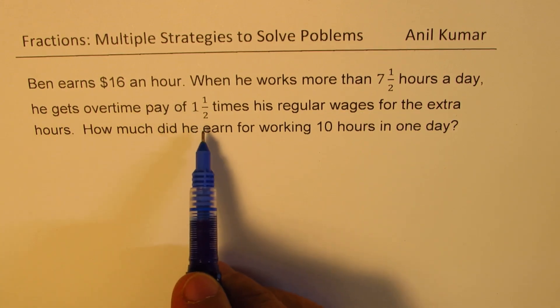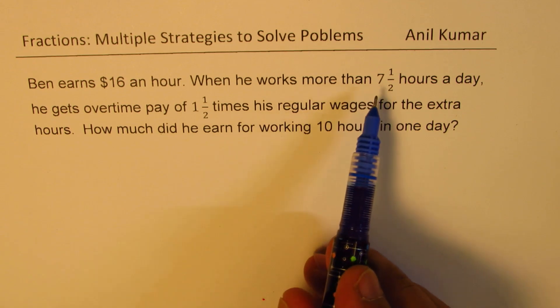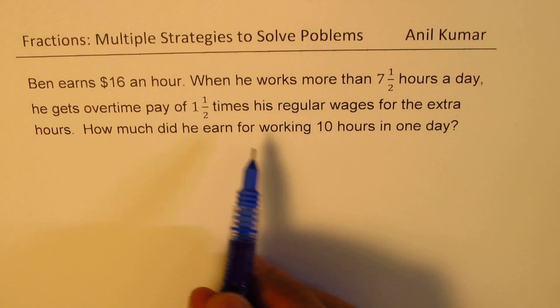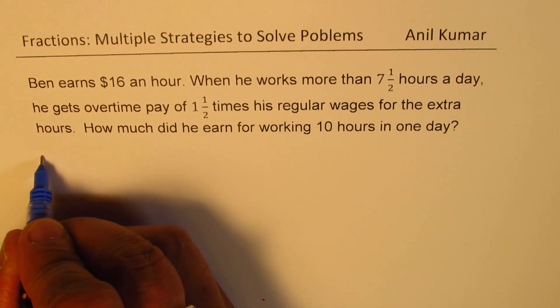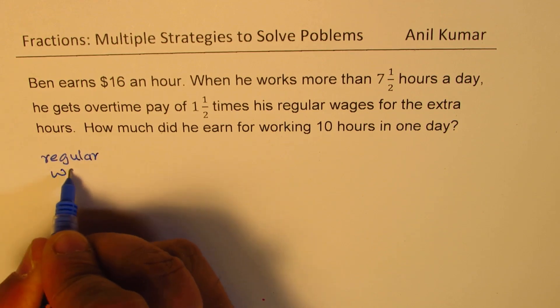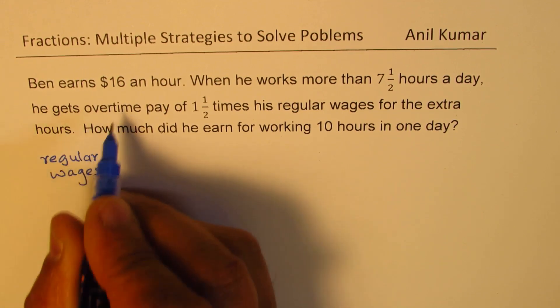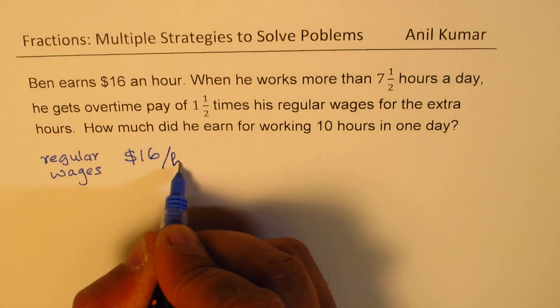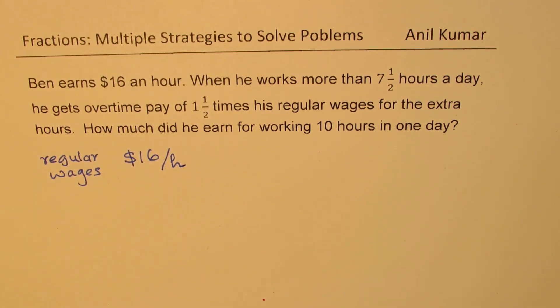Now here we are talking about two things. One is the time, the second is the dollar amount. So we are saying that the regular wages is how much? We know that the regular wages for Ben is $16 per hour. So every hour he normally earns $16.